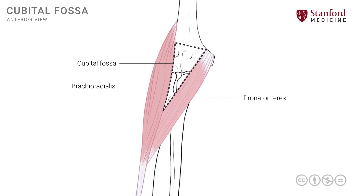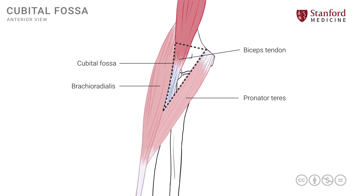This triangular area has certain key structures. The first is a tendon — the tendon of the biceps muscle, which is the main muscle of the arm. This tendon runs across the cubital fossa and goes on to its point of attachment onto the proximal radius. It is a strong tendon and can be easily palpated in the cubital fossa area. If one continues to palpate more proximally, one can feel the pulsations of the brachial artery.